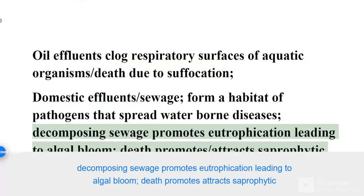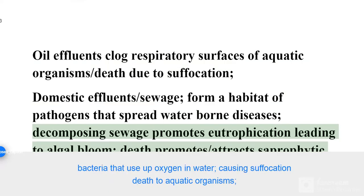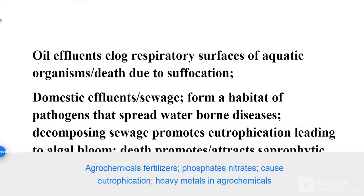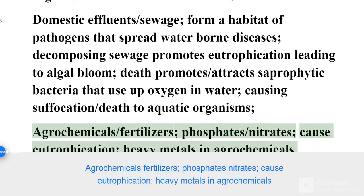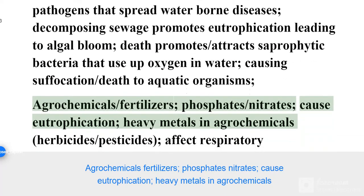Decomposing sewage promotes eutrophication leading to algal bloom and death. It also attracts saprophytic bacteria that use up oxygen in water, causing suffocation and death to aquatic organisms. Agrochemicals such as fertilizers containing phosphates and nitrates cause eutrophication, and heavy metals in agrochemicals are also harmful.